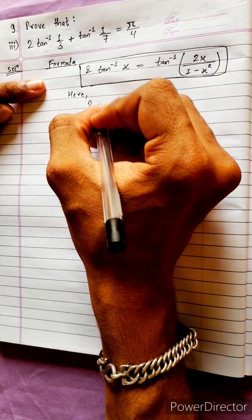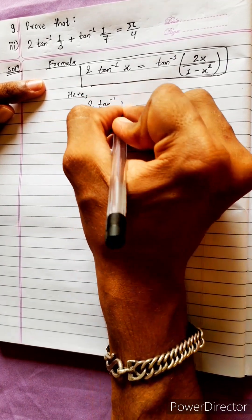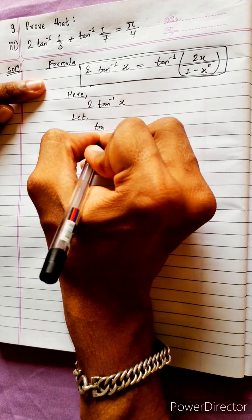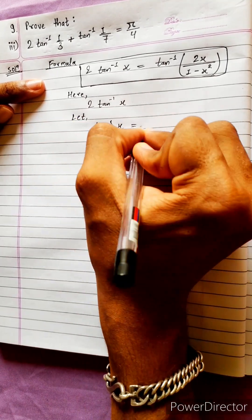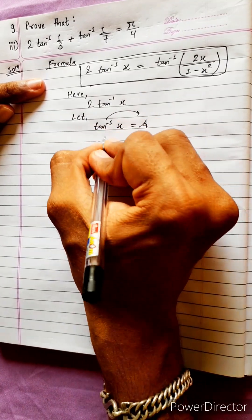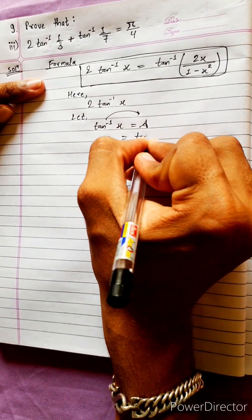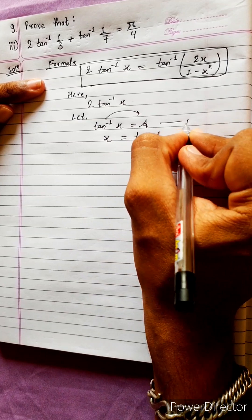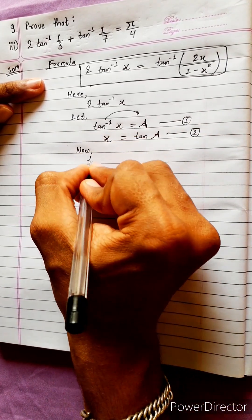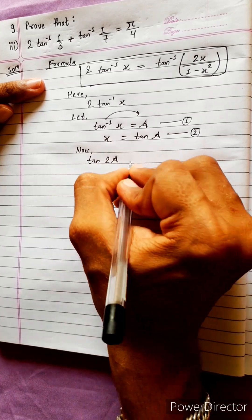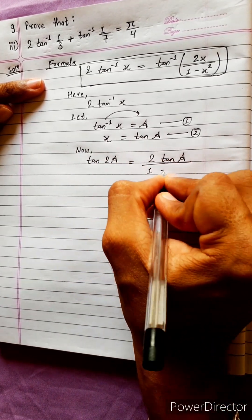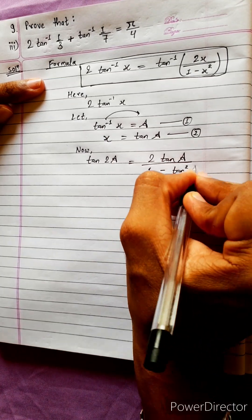2·tan⁻¹(x). Let tan⁻¹(x) equals to a. Then tan(2a) equals 2·tan(a) upon 1 minus tan²(a).